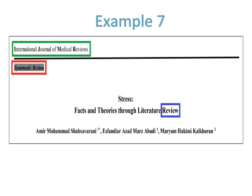Normally a review article presents background, definitions, and opinions with some researchers, but it is not required to report information about how the researchers were selected. The journal name is bordered with green color, systematic review is bordered with red color, and the word review in the title is bordered with blue color.